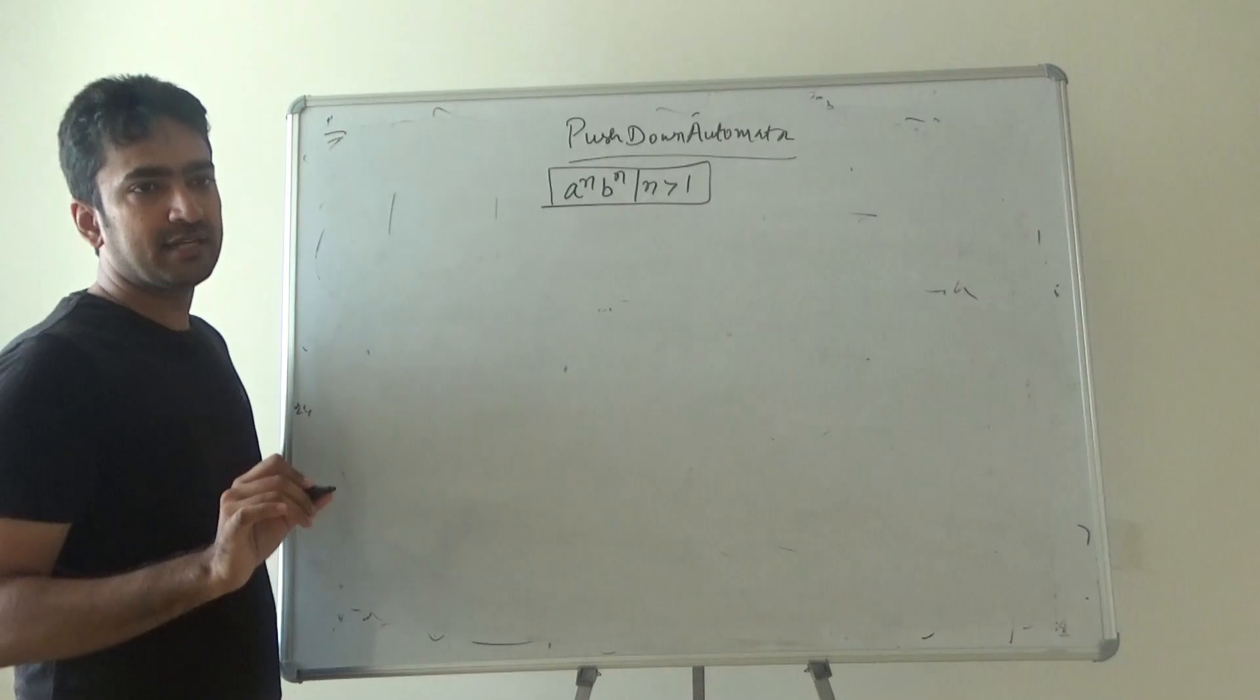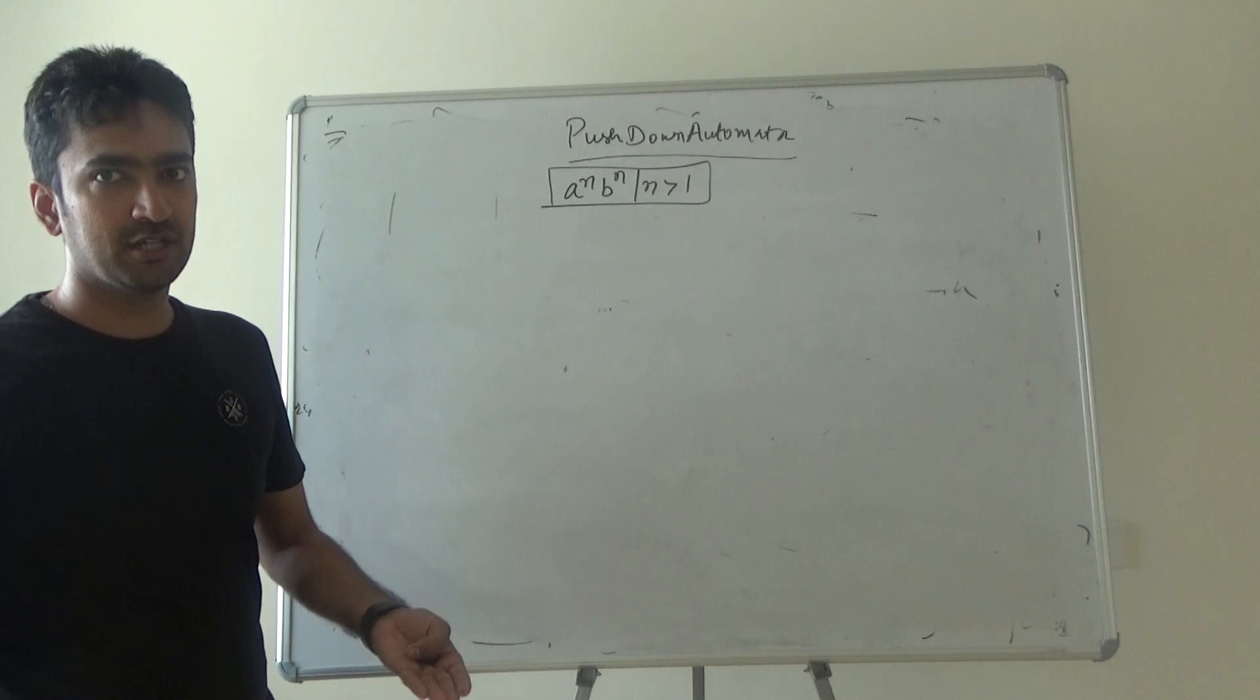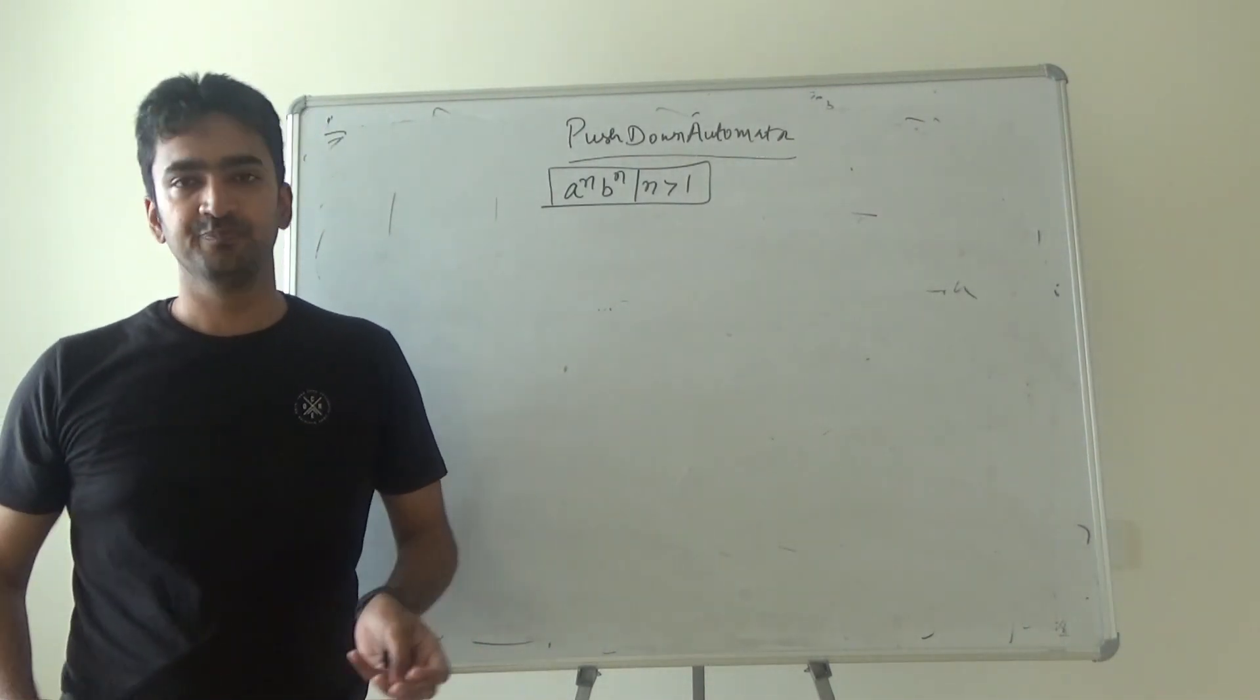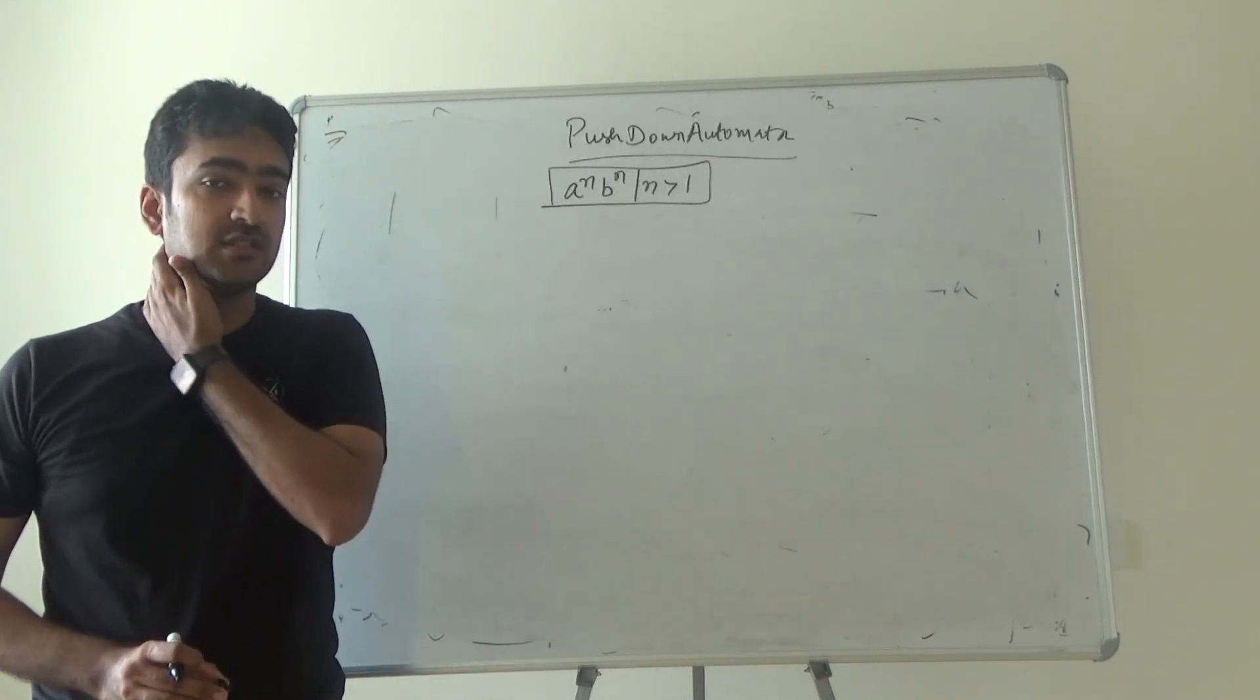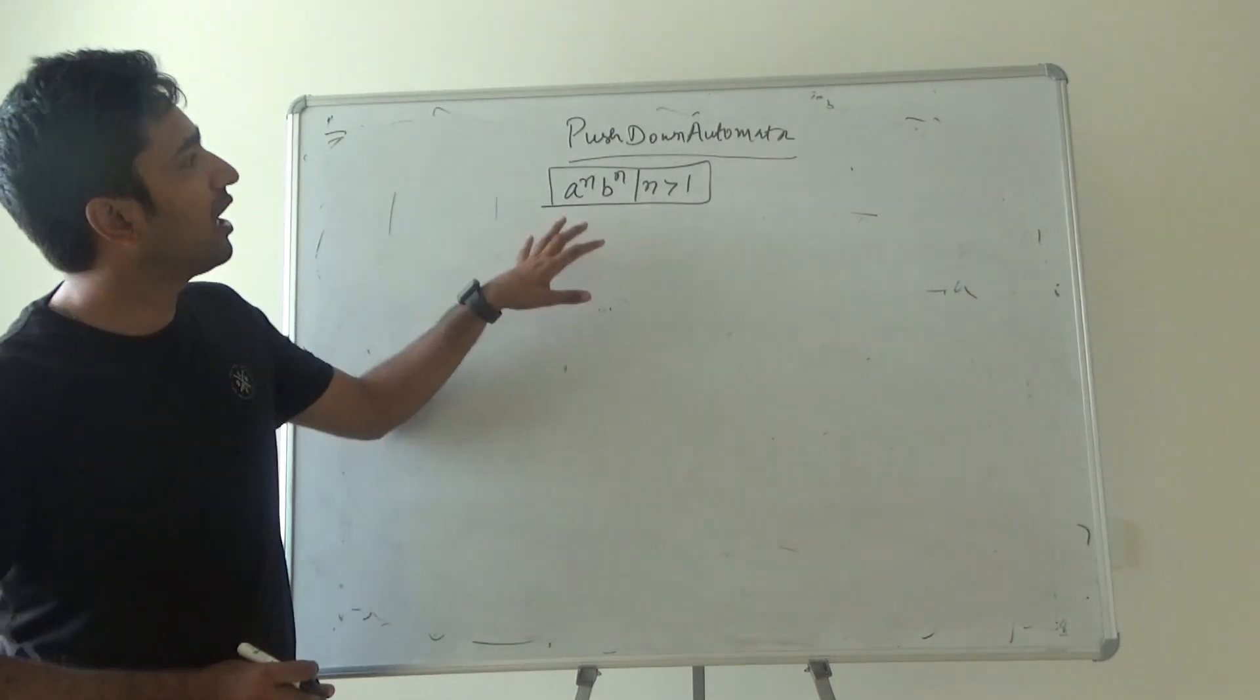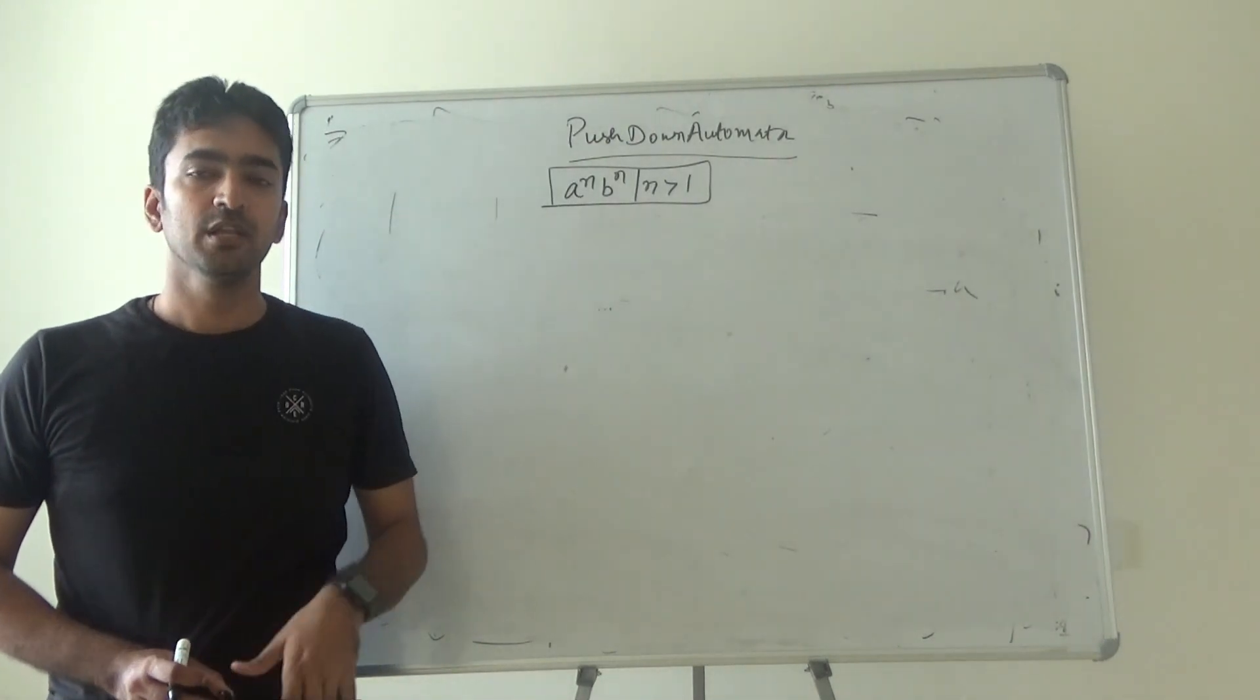We know that there are so many patterns which are available to find out whether it is acceptable by finite automata or not. Unfortunately, it would not accept that language. Some of the restrictions which are there in finite automata or regular languages are overcome in this concept which is known as pushdown automata.